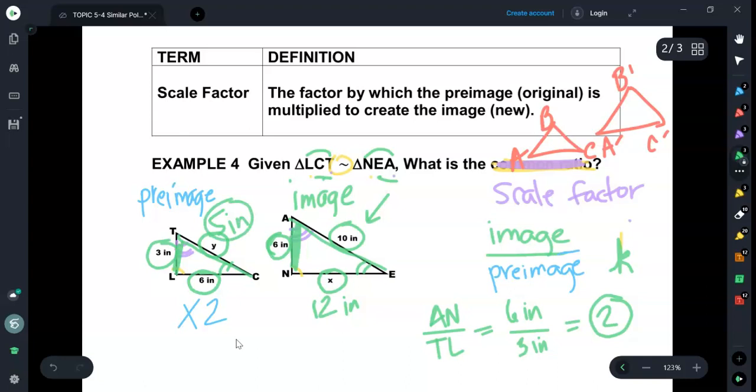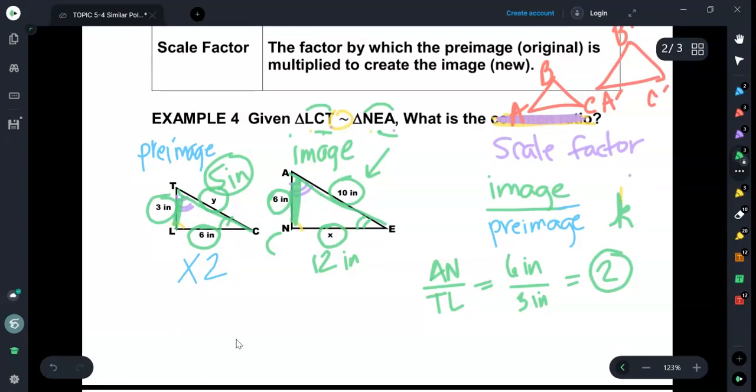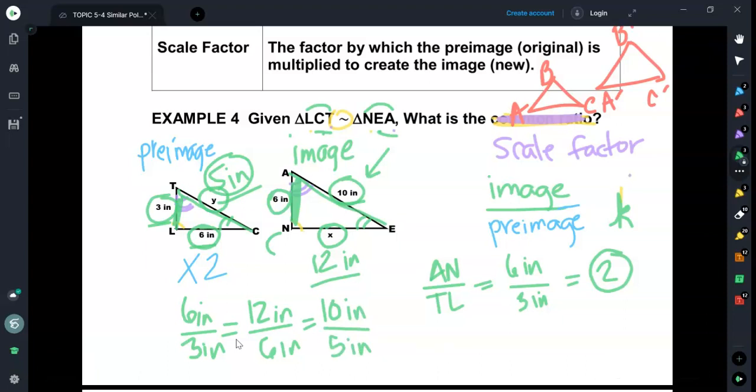You took the original and multiplied it by 2 to get this. So 10 divided by 2 sends me backwards, so that's going to be 5 inches. Now can you see how all of these ratios match up? We've got 6 over 3, then we had 12 over 6, and then we have 10 over 5. And if you look at it, all of them reduce to 2. That is a scale factor of 2.